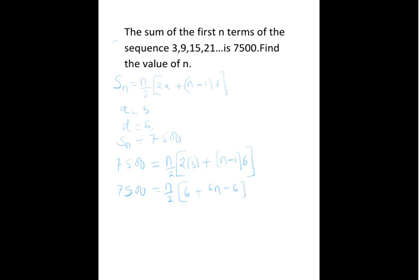So we'll have 7,500 equals n over 2 into 6 minus 6, that is 0, so we remain with 6n.